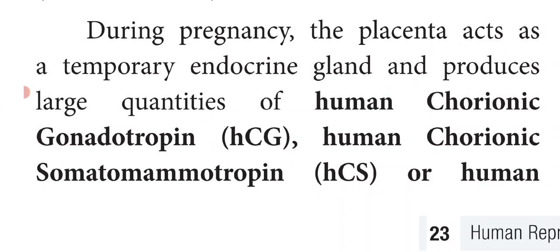The placenta produces large quantities of human chorionic gonadotrophin (HCG), human chorionic somatomammotrophin (HCS), human placental lactogen (HPL), estrogen and progesterone, which are essential for the normal maintenance of pregnancy.